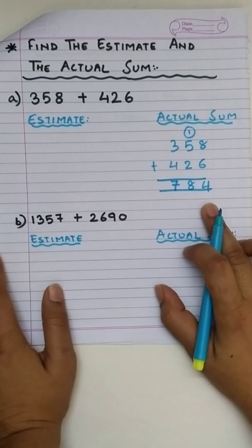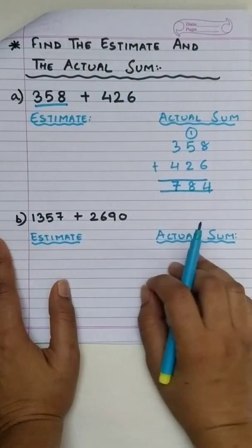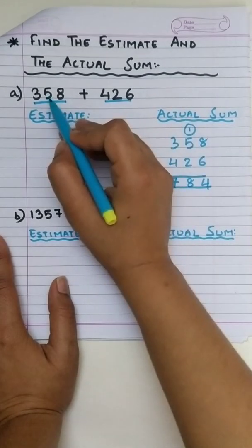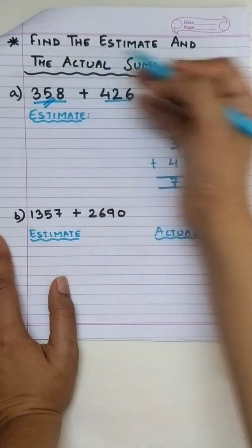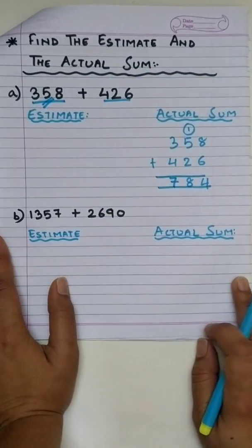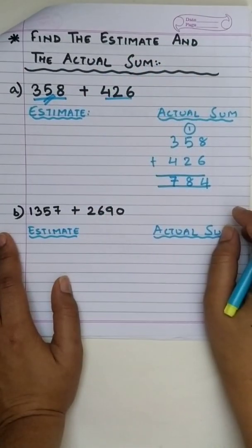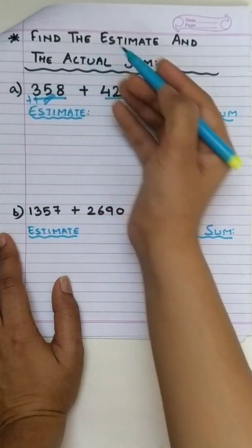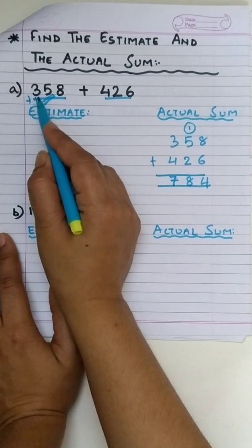Now, in order to estimate we'll round off these to the nearest hundreds. Okay, both these numbers. So, first let's round off this. We'll observe the digit at tens place. Correct! So, this is 5 and if the digit is 5 or more than 5 we will add 1 here. Exactly! Which makes it 400.